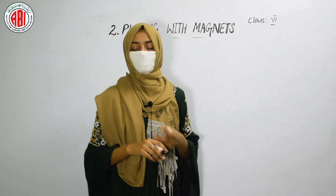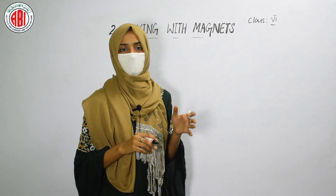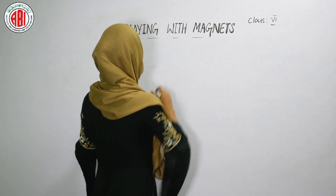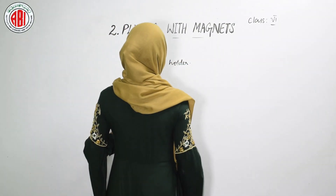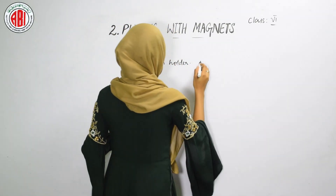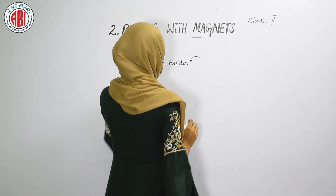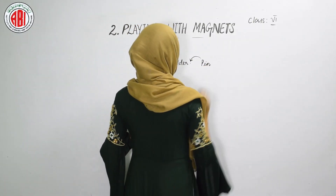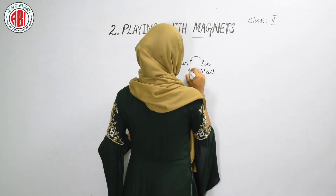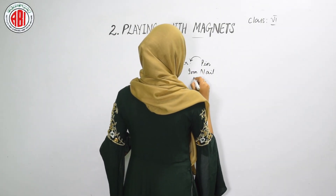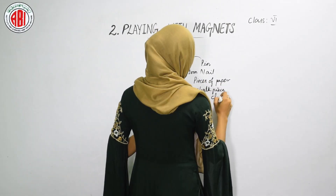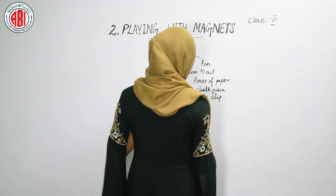To know whether the materials are magnetic or non-magnetic, let us do an activity. In this activity, we are going to take one pin holder. By taking this pin holder, we are going to drop some of the substances in it. We will drop a pin, iron nail, and we will also put some pieces of paper, a piece of chalk, a paper clip, and rubber.